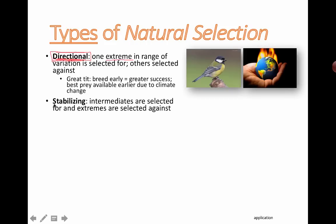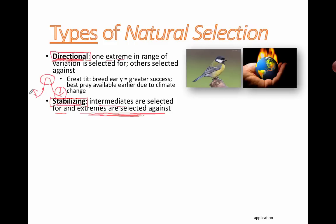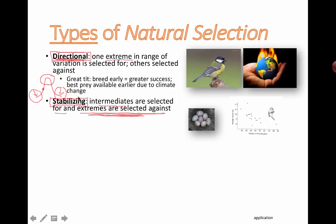For humans, I talked about height earlier. Stabilizing selection is actually what kind of dictates height for humans. We can imagine it as a normal distribution curve. There are very few extremely tall people and very few extremely short people; most people tend to be bunched around the average. That's an example of stabilizing selection. Intermediates are selected for and extremes are selected against.